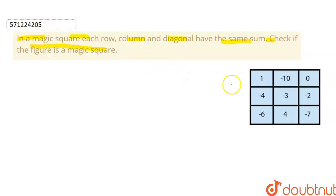So in a magic square, the sum of rows, first row, second row, third row, column and diagonals is the same. First we'll draw row, column for row, column and diagonal.